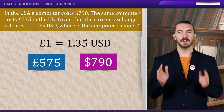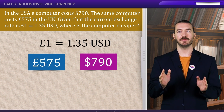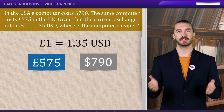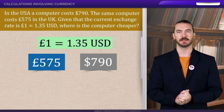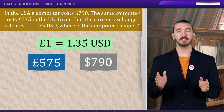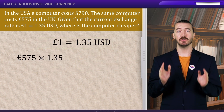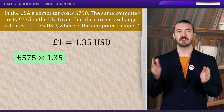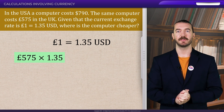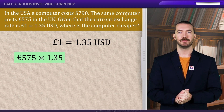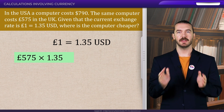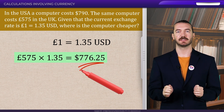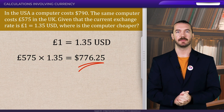For ease, we will convert £575 to US dollars, and to do this we need to multiply 575 by the rate, which is 1.35. This gives us $776.25.